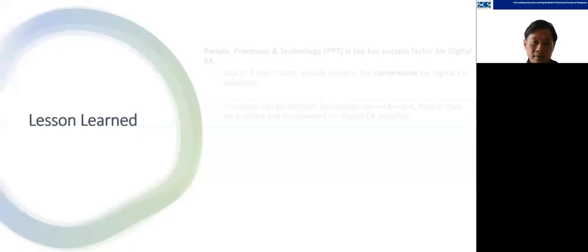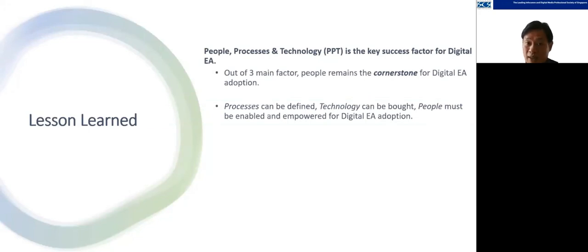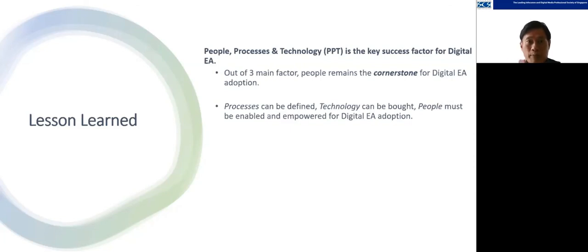Lesson learned: the key factors for digital EA transformation are people, process, and technology, but of these three, people are the cornerstone — because they are the ones adopting EA. Processes can be defined and technology can be bought, but people must be enabled and empowered for digital EA transformation. When doing a digital EA transformation, remember that people are the ones helping you. Engage them, talk to them, work together, journey with them, and you can have a very successful transformation.